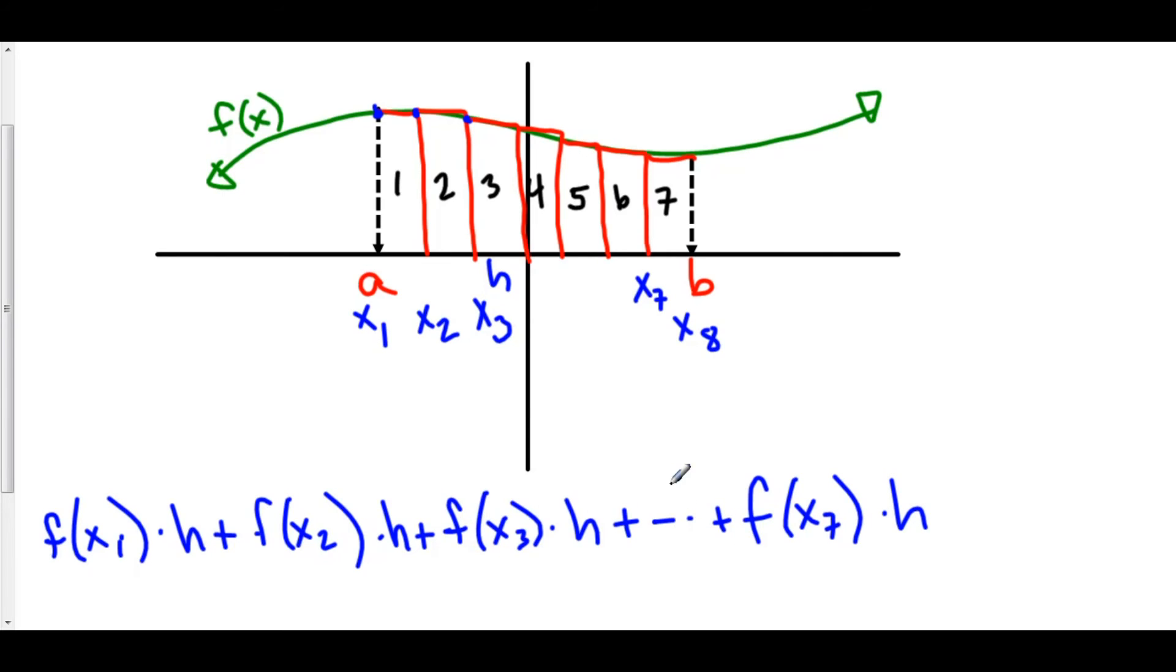Now the dot dot dot just means that, you know, 4, 5, 6, they're all in here as well. But to save time and room, let's write it this way. Now, this is how we find the Riemann approximation. That's it. We're done.